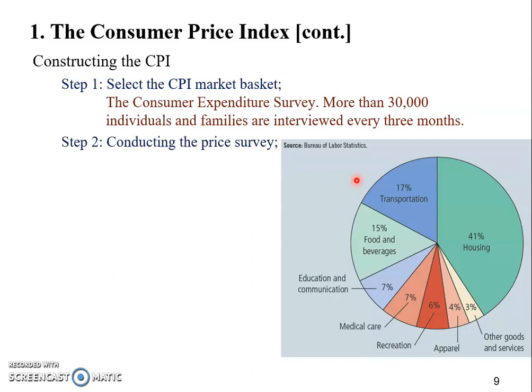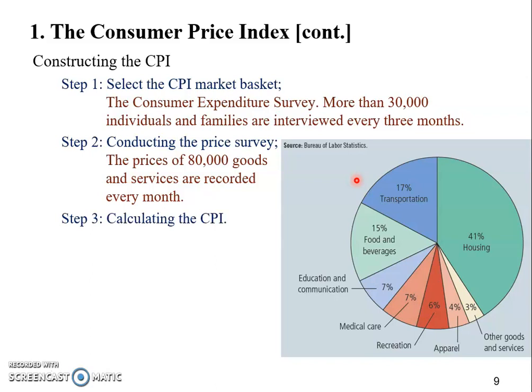The second step is the price survey. Once we figure out the market basket, we conduct the price survey, which covers about 80,000 goods and services and is conducted every month. Once we have the fixed market basket and the prices, we can calculate the CPI using the steps already discussed — pick the base year, figure out the cost of living in the base year, figure out the cost of living in the current year, and then find the ratio.